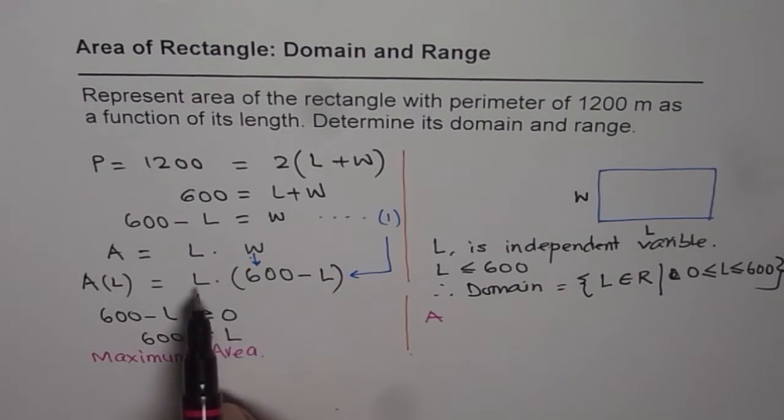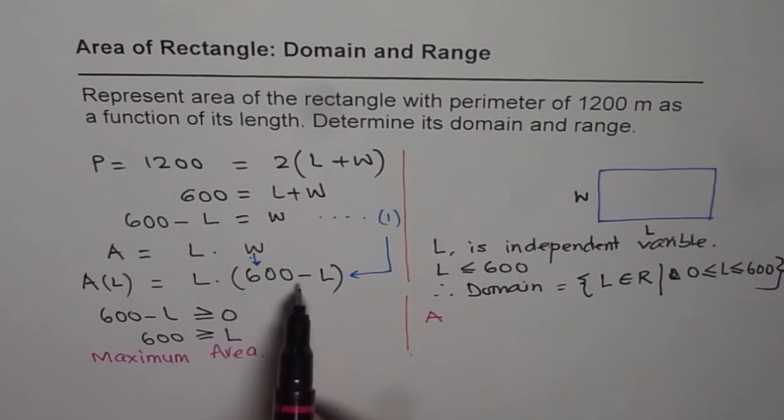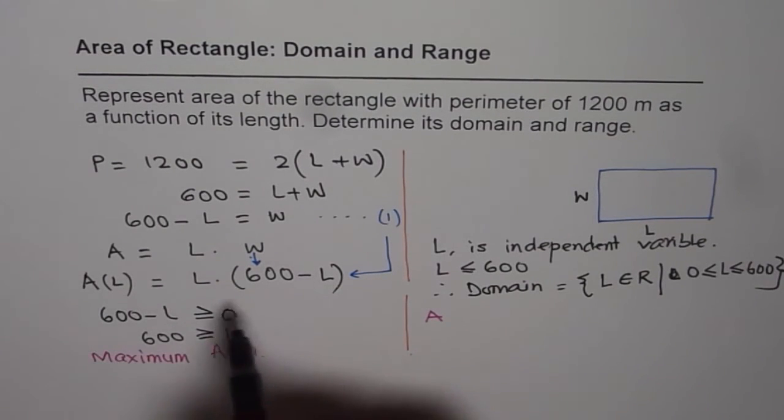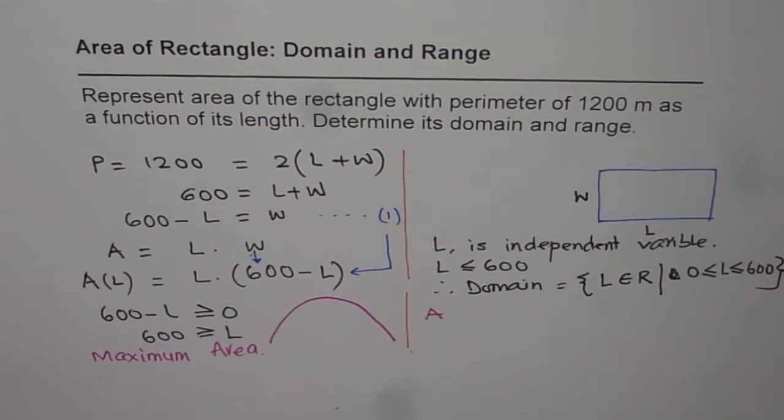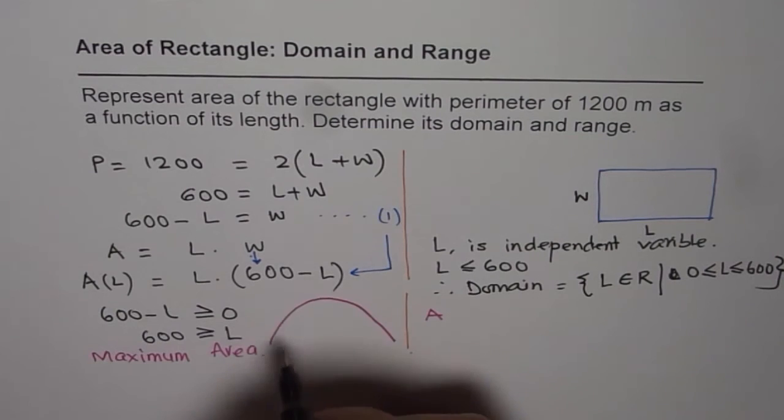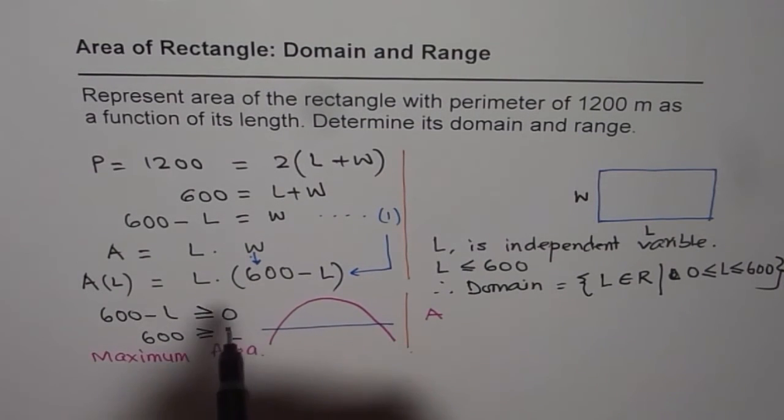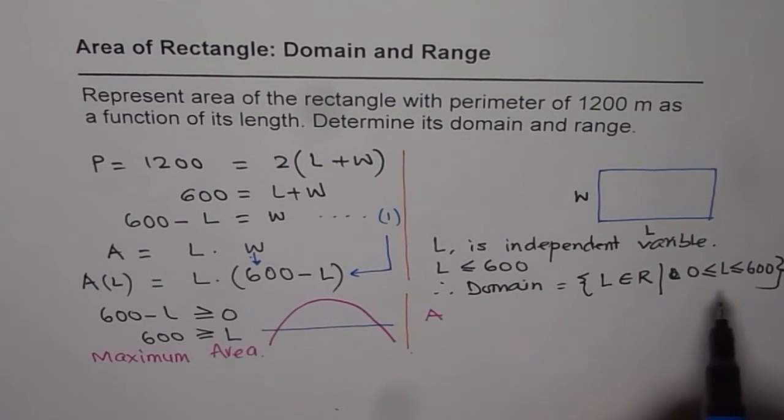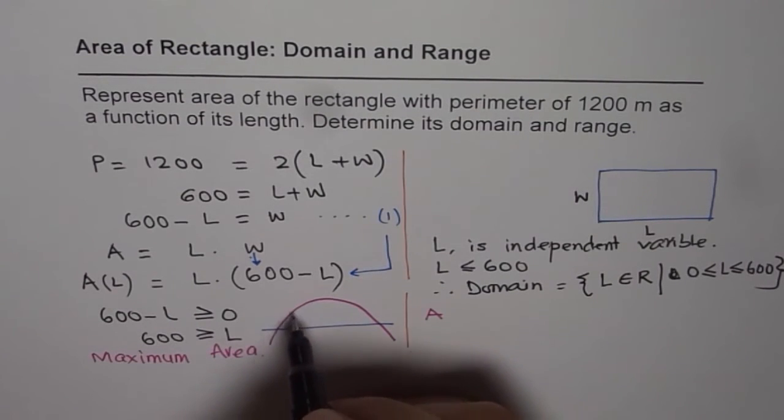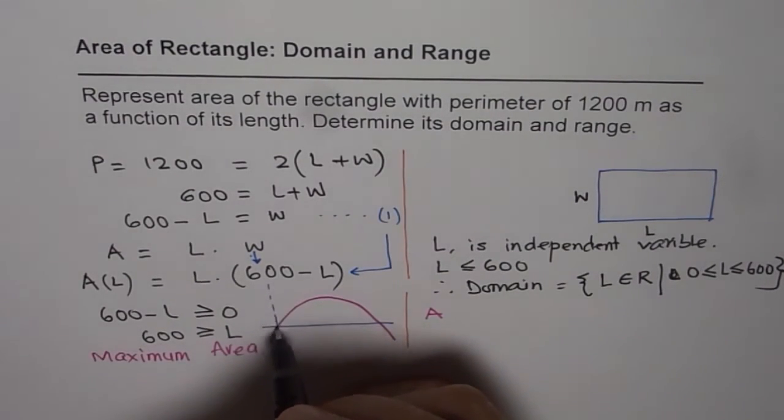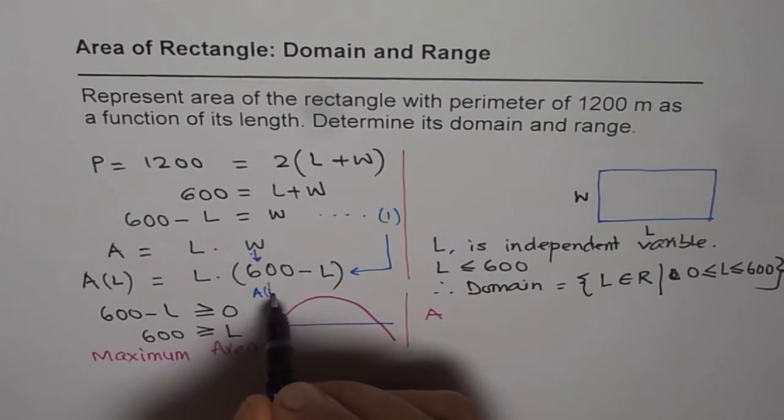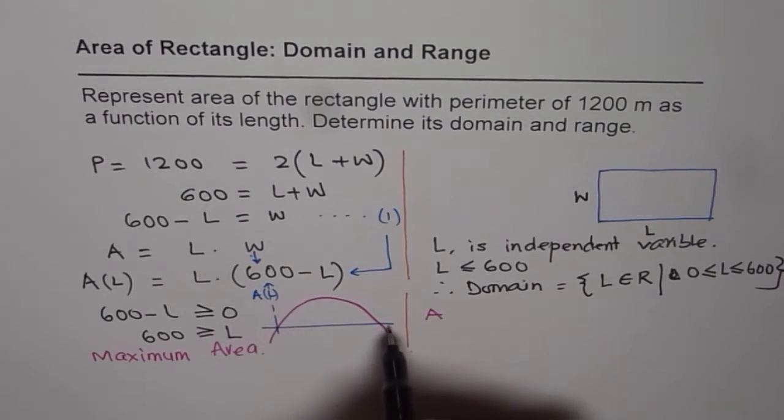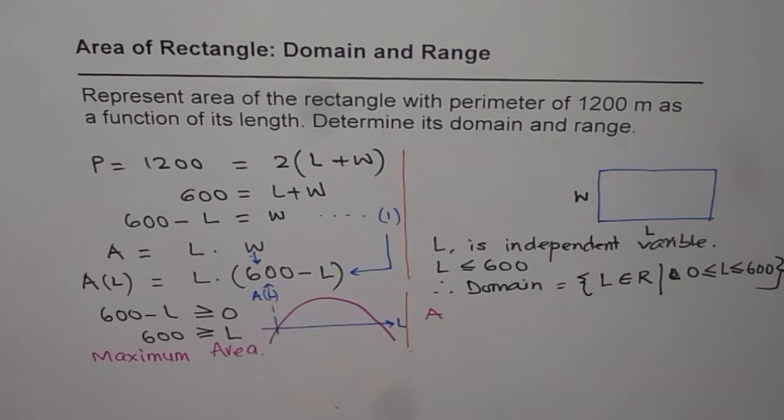And since if you multiply L and L, we will get minus L squared. So it is kind of a parabola, which will be upside down like this. So if you graph this, what I am trying to say is, if you graph this, taking different values of L, let us say between 0 to 600, then you will get a graph like this. So in this graph, we are having area as a function of length on y-axis and length on the x-axis.